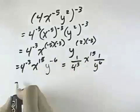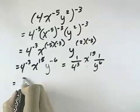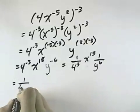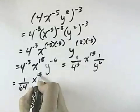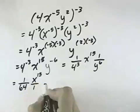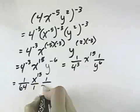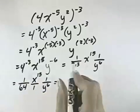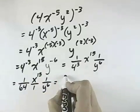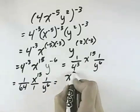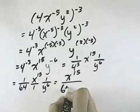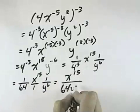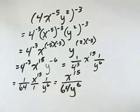4 to the third power is 64, so this can be 1 over 64, and then x to the fifteenth would be over 1, and 1 over y to the sixth can all be combined together to leave x to the fifteenth in the numerator and 64y to the sixth in our denominator.